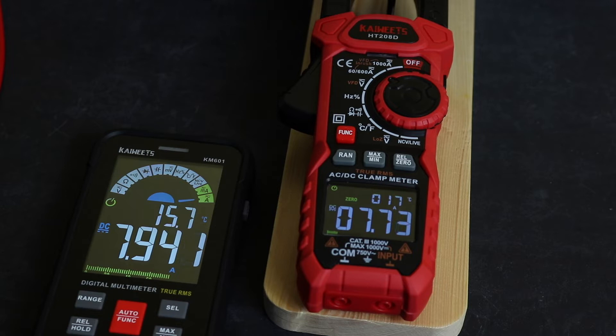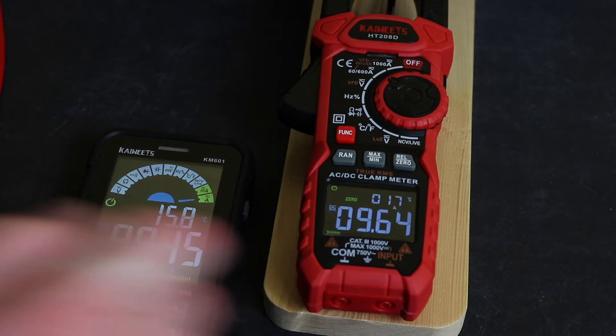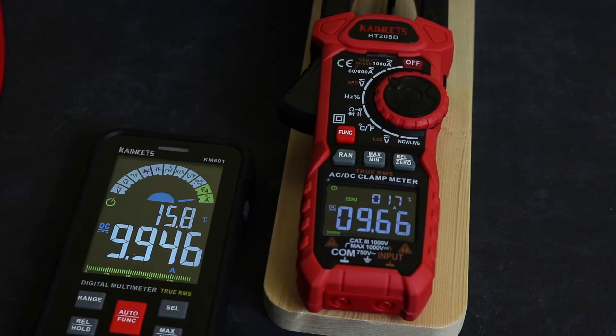10 amps is obviously the maximum that the KM601 will go to, and then we are actually out of tolerance with that reading. 9.68, 9.94, but you can see it's genuine 9.94, which is pretty much 10 amps going through. The instrument should be reading it.